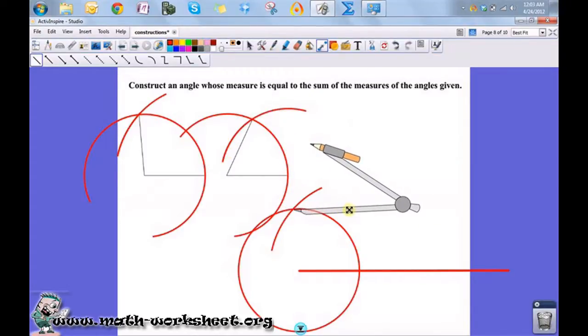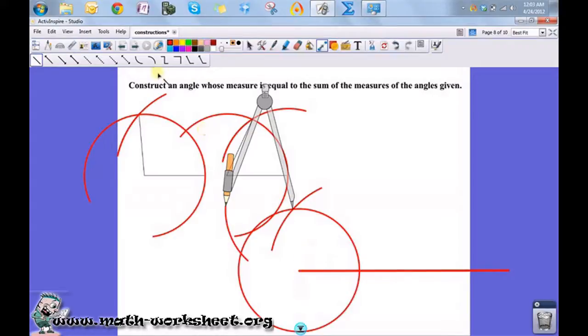So now I'm just going to put my compass there. So now I'm going to draw an arc here, and draw an arc. Okay, so if I connect this point with that one, that represents the sum of the two angles.